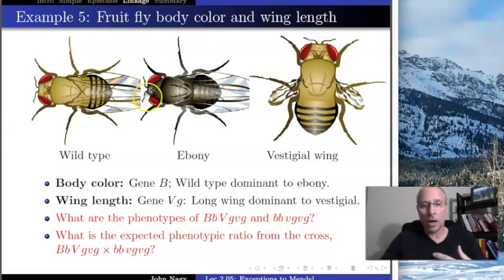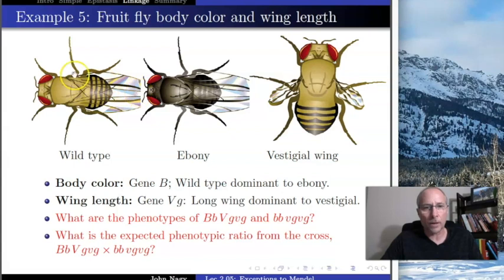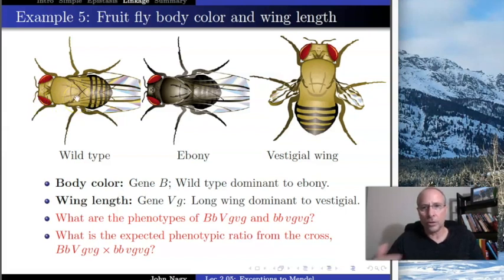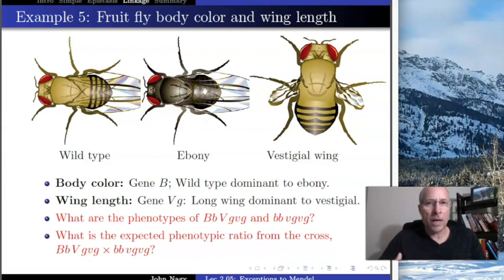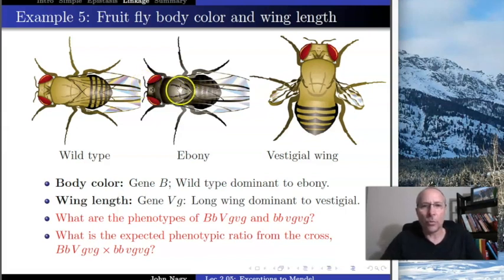Believe it or not, we learned a ton about human genetics by studying insects. There's a trait — body color. Most flies you find in the wild are gray, so we call them wild type. But in laboratory populations cultured for decades, a mutant has appeared that makes the body black — we call that ebony. It's only a mutation noticed in the laboratory, so we call it the mutant form.